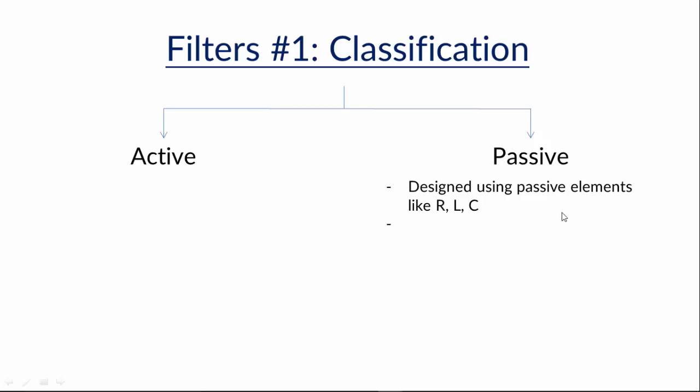Filters are mainly categorized into two types: active filters and passive filters. If a filter is designed using passive elements like resistor, inductor, or capacitor, then it is called a passive filter.